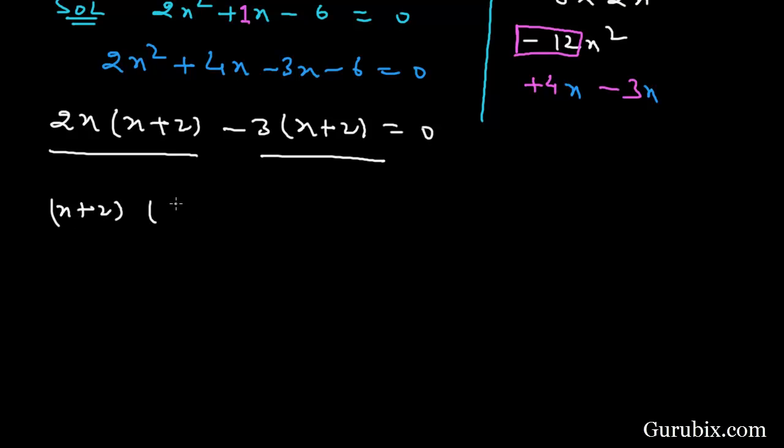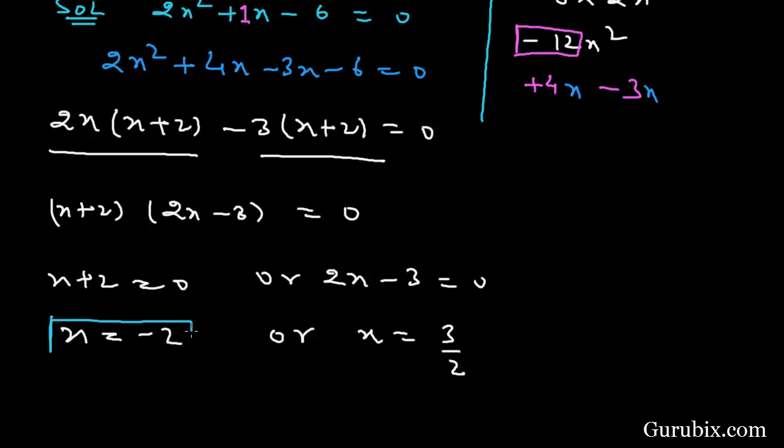So in the second bracket it remains 2x - 3 = 0. And now we shall put x + 2 = 0 or 2x - 3 = 0. This means x = -2 or x = 3/2. So these are the two roots of the given quadratic equation. This is the solution of the question, thank you.